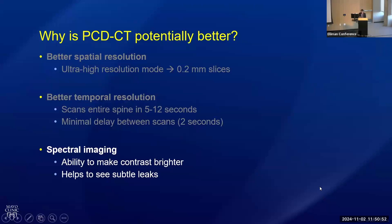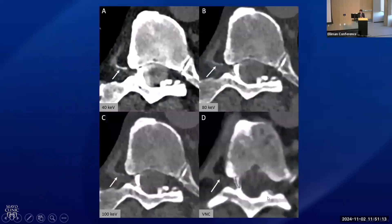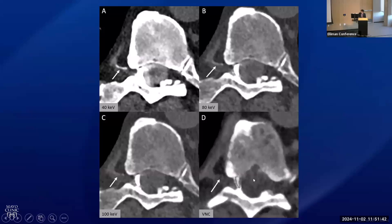The last main advantage is that photon counting CT confers spectral imaging — we can detect the energy levels of the photons hitting the detector. One thing you can do with spectral imaging is make contrast look even brighter than it actually is, which really helps when looking for subtle CSF leaks. Here are four images from the same patient at the same slice. The top left uses spectral imaging to make the contrast exceptionally bright, and you can see a little paraspinal vein filling up with contrast — a very clear CSF venous fistula. It's much harder to see when reconstructing at different energy levels without capitalizing on this benefit.